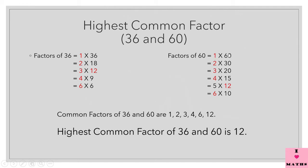Now for 60: 1 and 60 are factors of 60. 2 × 30 = 60, so 2 and 30 are factors of 60. 3 × 20 = 60, so 3 and 20 are factors of 60. 4 × 15 = 60 and 5 × 12 = 60, so 5 and 12 are factors of 60.